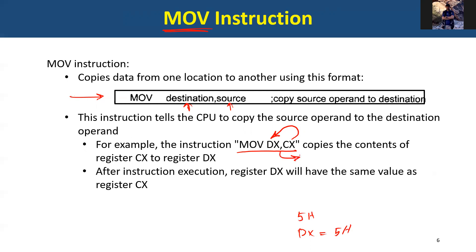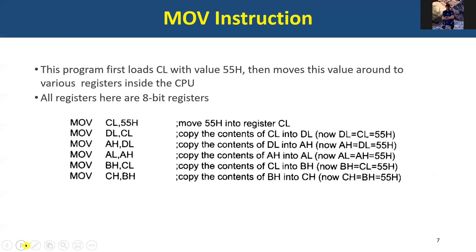You can translate it into a normal programming language like this: DX equals CX. Here are more examples. We're going to move 55 hex into CL. In the second instruction, we move what's in CL into DL — basically DL equals CL. Then we move what's in DL, which is 55, into AH. Then we move what's in AH into AL. Then we move what's in CL, which is 55 again, to BH. Finally, we move what's in BH into CH. All of them will have the value 55 after executing all these instructions.